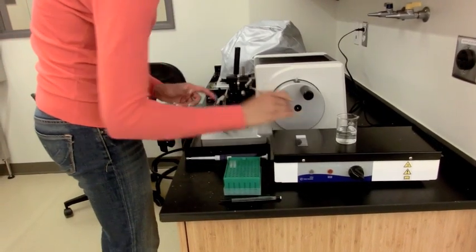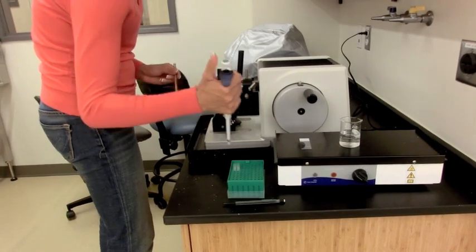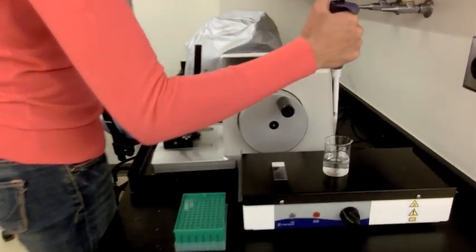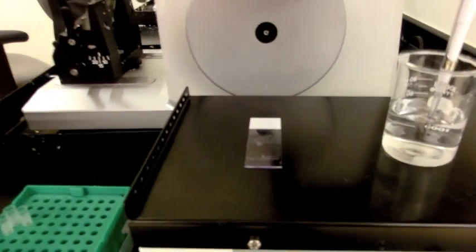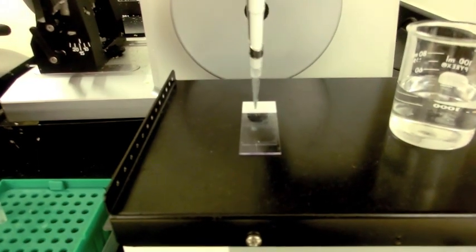Remove a blank slide from the box and label it with your initials, organ type, and date. Place the slide down on the warmer and using a transfer pipette put a few drops of water onto the slide.